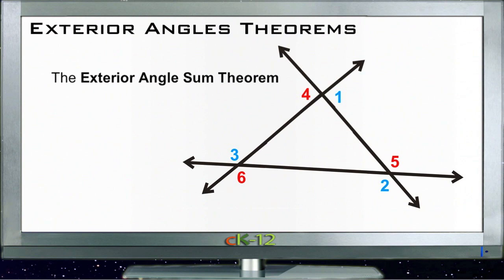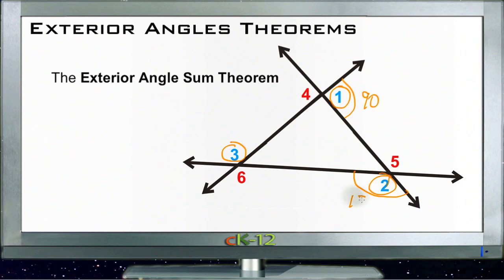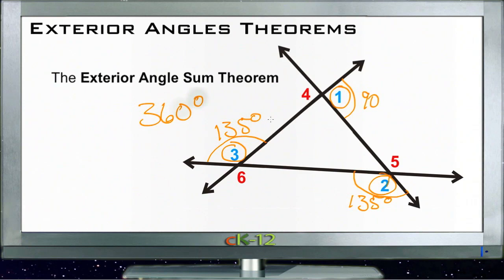The first theorem, the Exterior Angle Sum Theorem, tells us that the exterior angles of a triangle — or any polygon — always sum to 360 degrees. So either set of exterior angles, whether the blue set shown here: from here to here is about 90 degrees, from here to here is about 135 degrees, and from here to here is about 135 degrees again — all three of those angle measures added together always equal 360 degrees.